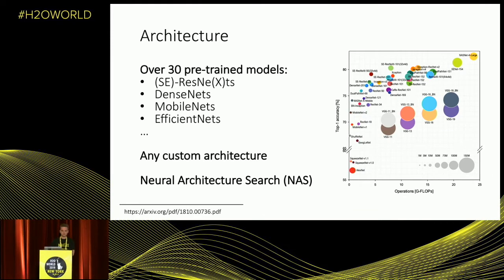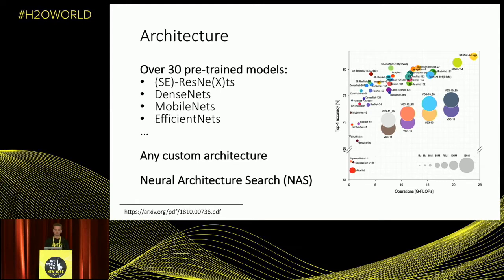Speaking about architectures, we have three major options. The first is using pre-trained models from ImageNet — this list includes over 30 models: different ResNets, DenseNets, MobileNets, recent EfficientNets, and so on. If you're confident that some custom architecture works really well for your dataset, you can define a custom set of layers and it will work. The third option is neural architecture search, where we search for an architecture most suitable for your dataset — not using famous architectures like ResNets, but developing a completely new one. It trains a bit longer since we need to define and train it from scratch, but we have this option.